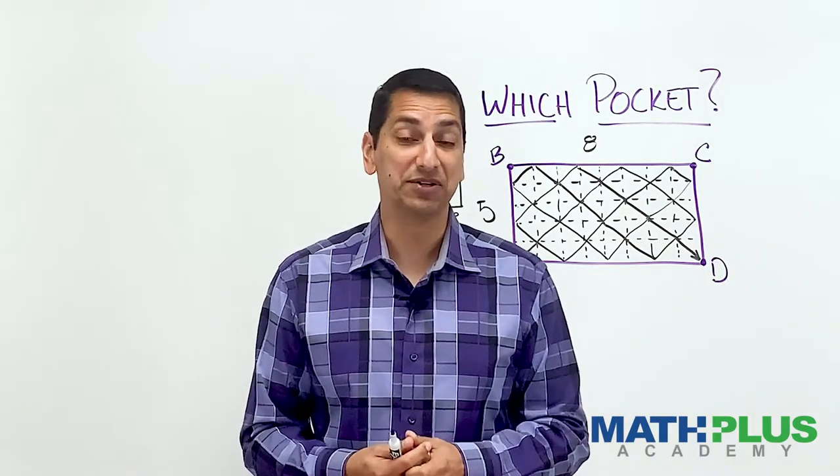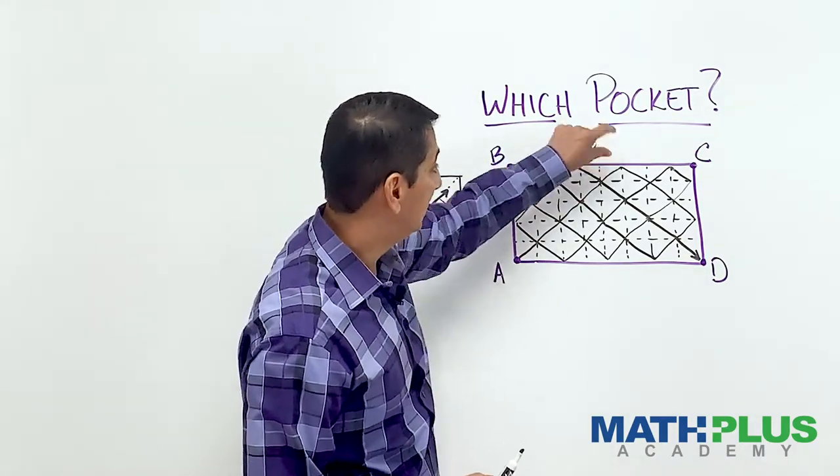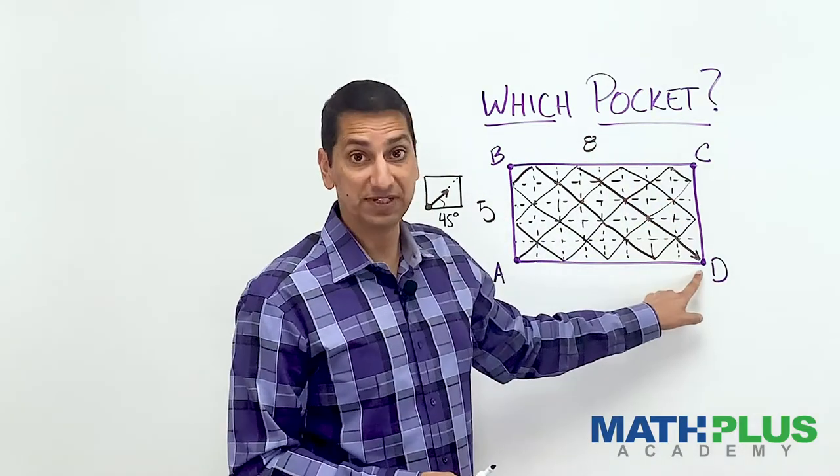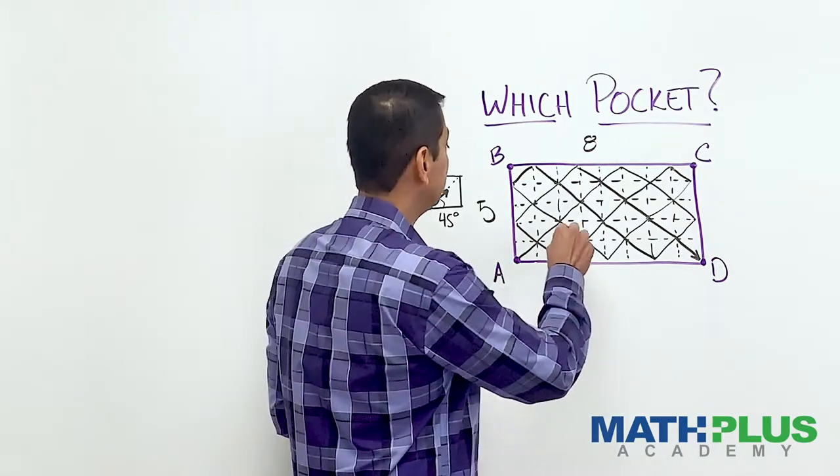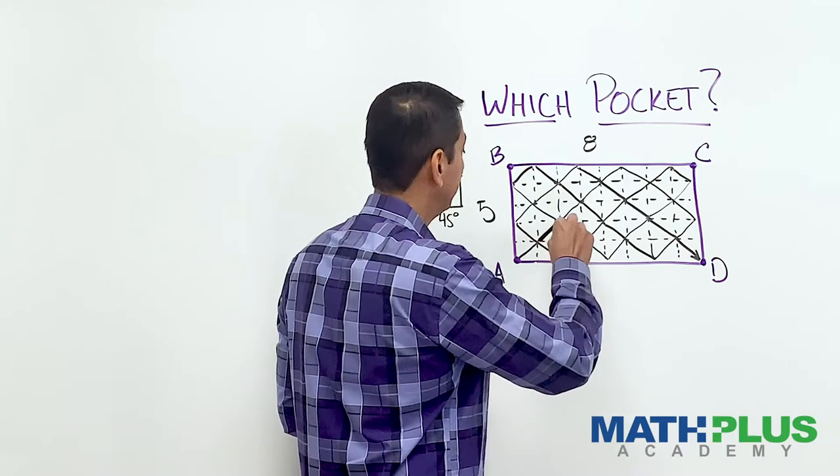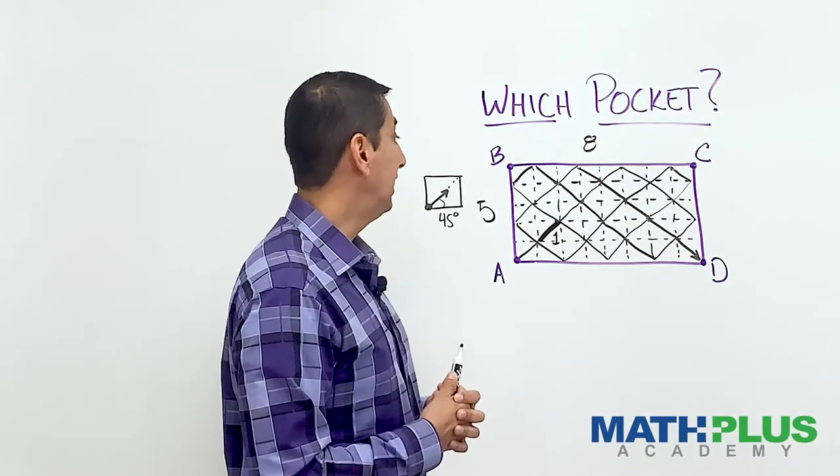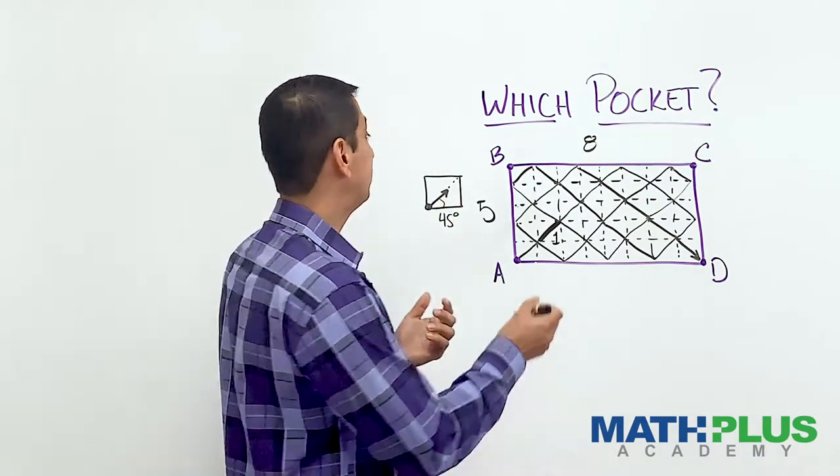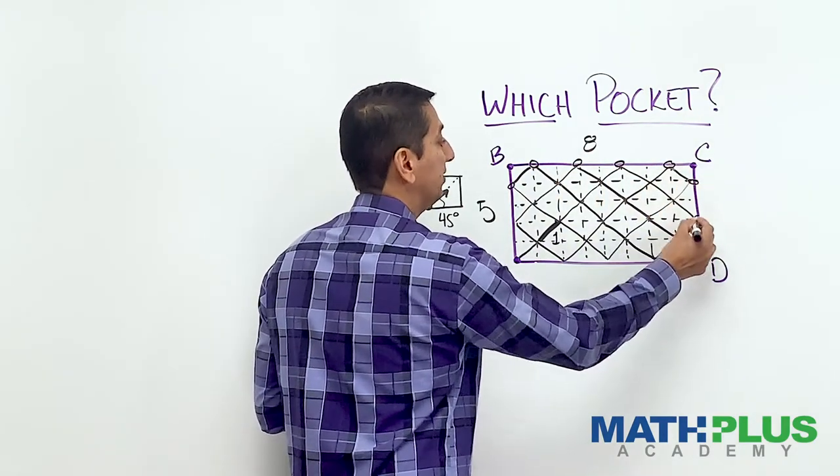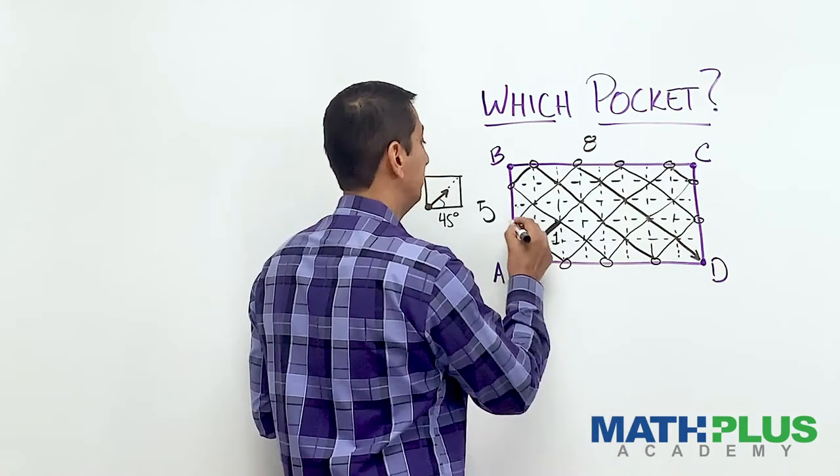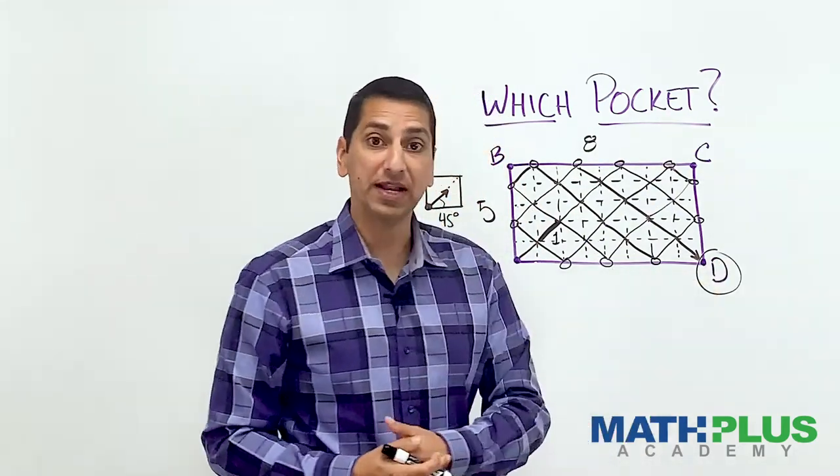Now the question I have for you, there's a lot of things we could be thinking about here. One would be how many little segments did this ball travel as it made its way over to D? That's one thing we could track. So the number of segments or the distance traveled, where I might use this diagonal piece right here as my unit so that it's easier to count. And then how many bounces? Look at all the different times the ball bounced off the wall. Wow, lots of them. So you might want to count those. And then of course, which pocket, right? Where'd it end up? It ended up in D.